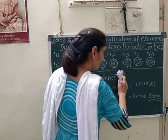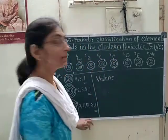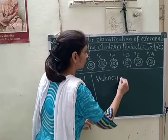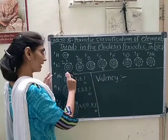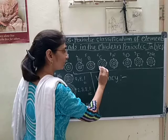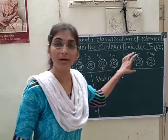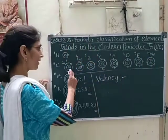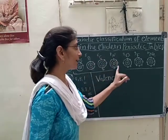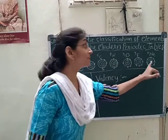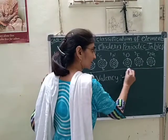Next we will see the trend of valence along the period and along the group. Along the period, the valence up to carbon increases and after carbon it decreases again. One valence, two valence, three valence, four valence — then after four, again three valence, two valence, one valence and zero valence. It will decrease up to zero along the period.